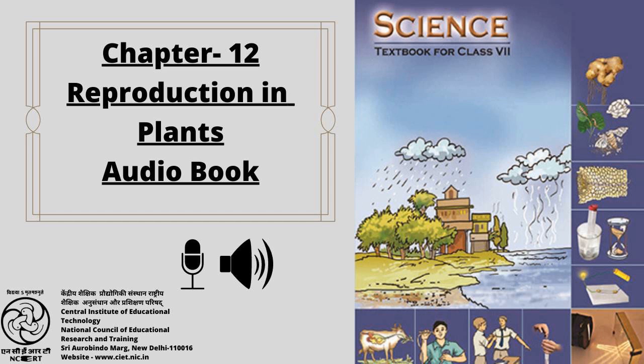Exercises: 1. Fill in the blanks: A. Production of new individuals from the vegetative part of parent is called ___. B. A flower may have either male or female reproductive parts; such a flower is called ___. C. The transfer of pollen grains from the anther to the stigma of the same or of another flower of the same kind is known as ___. D. The fusion of male and female gametes is termed as ___. E. Seed dispersal takes place by means of ___, ___ and ___. 2. Describe the different methods of asexual reproduction. Give examples.